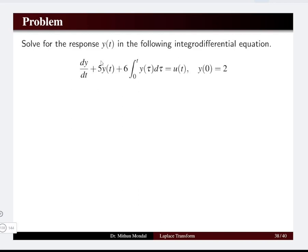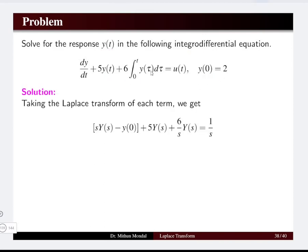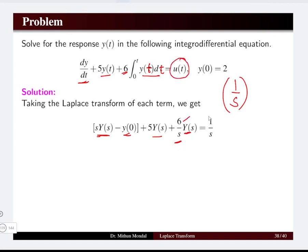The next problem is to solve the response y(t) in the following integral differential equation. Unlike the previous problem, this one includes an integral term: dy/dt + 5y(t) + 6∫₀ᵗ y(t)dt = u(t), with initial condition y(0) = 2. Taking the Laplace transform of each term: dy/dt becomes sY(s) − y(0); 5y(t) becomes 5Y(s); and the integral term converts to Y(s)/s multiplied by 6. The Laplace transform of u(t) is 1/s.